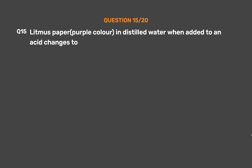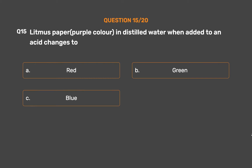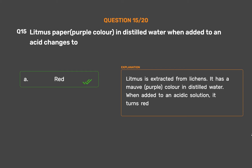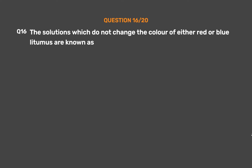Question number 15. Litmus paper, purple color in distilled water, when added to an acid changes to — Option A: Red. Option B: Green. Option C: Blue. Option D: Violet. The correct answer is Option A: Red. Litmus is extracted from lichens. It has a mauve, purple color in distilled water. When added to an acidic solution, it turns red.